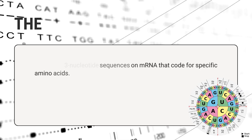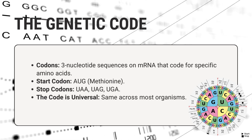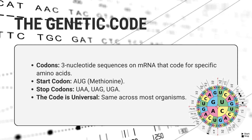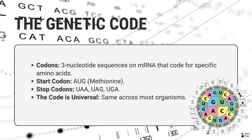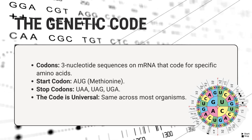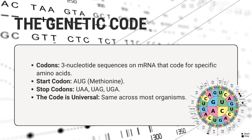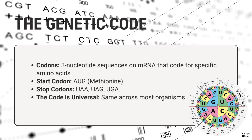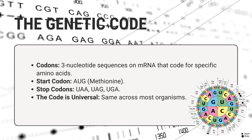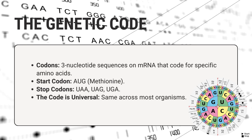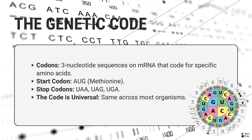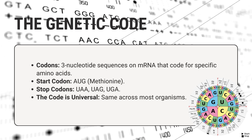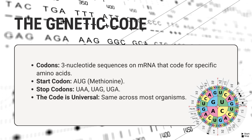The genetic code consists of codons, which are three-nucleotide sequences on mRNA that specify particular amino acids. The start codon, AUG, initiates protein synthesis and codes for methionine. Stop codons signal the end of translation. This code is nearly universal across all organisms, reflecting its fundamental role in biology.